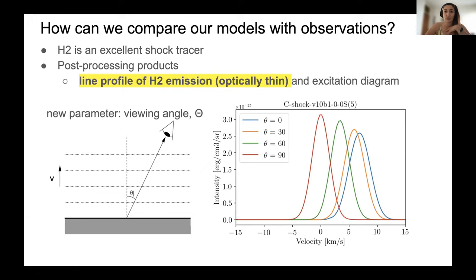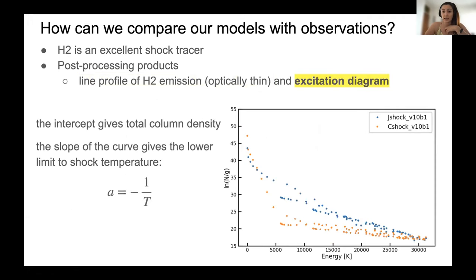Another thing that we can use to compare our models to the observation is the excitation diagram, given here in this image. The excitation diagram can give us information on the total column density and on the lower limit to the shock temperature. Now, without going into any details, I will just say that the local slope of these curves here gives us the temperature. The steeper the slope, the lower the temperature. As you can see here, the C shock in this area here is steeper, which means that it has lower temperature, which corresponds to the plot that I showed you on the first slide.